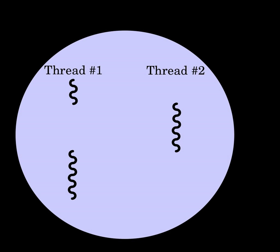Multiple threads can exist within one process, executing concurrently and sharing resources such as memory, while different processes do not share these resources. In particular, the threads of a process share its executable code and the values of its dynamically allocated variables and non-thread-local global variables at any given time.